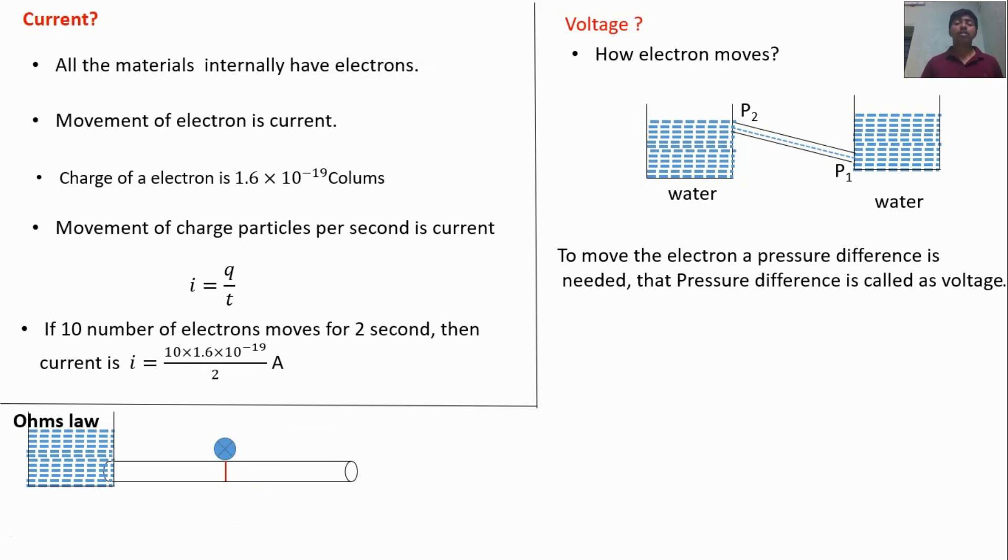Similarly, in electric circuits, if the resistance is high, there is no current flow. If it is open, what will happen? Water molecule easily moves. Similarly, if in a circuit the resistance is zero, the current flow will be maximum.